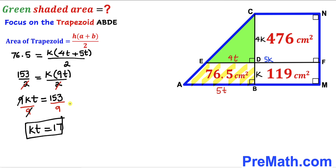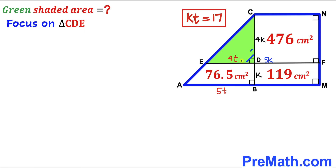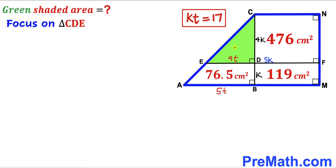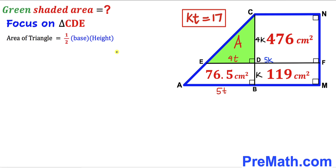Now let's calculate the area of the green shaded triangle CDE. We label its area as uppercase A and recall the triangle area formula: Area = ½ × base × height. The base of the green triangle is 4t and the height is 4k, so A = ½ × 4t × 4k.